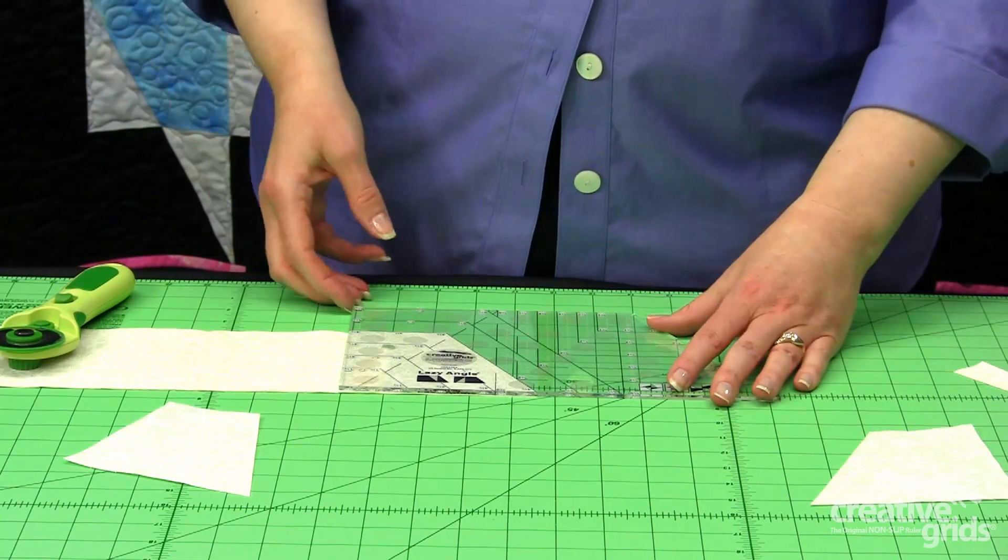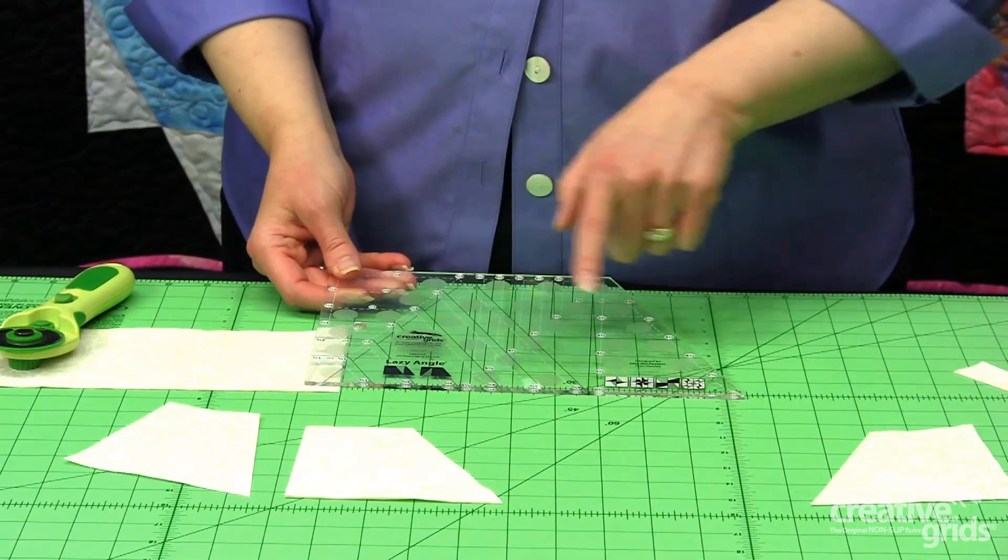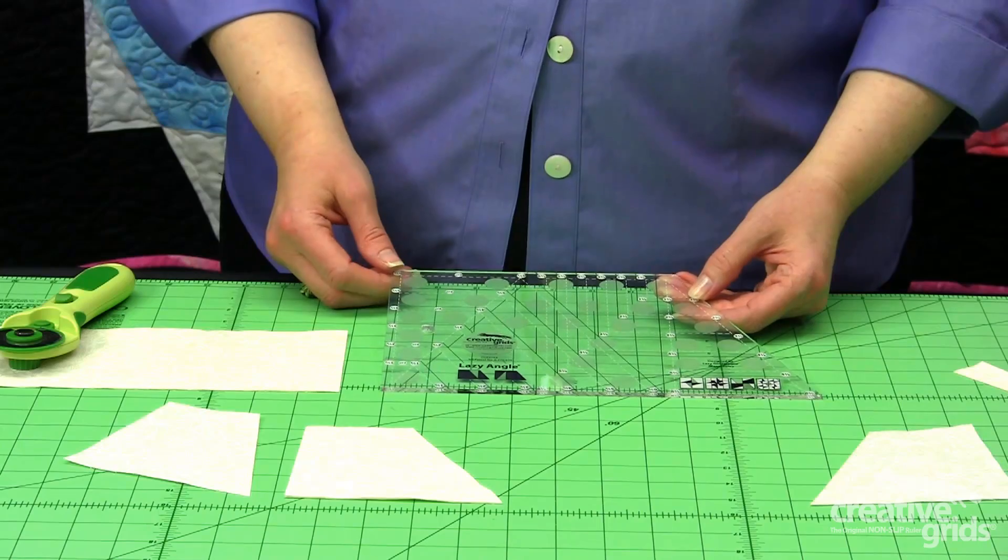And there's no waste from cut to cut because we can cut both shapes, A and B, on both edges of the ruler, working down our strip from cut to cut with no waste in between.